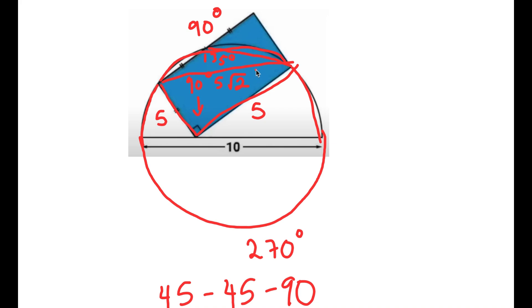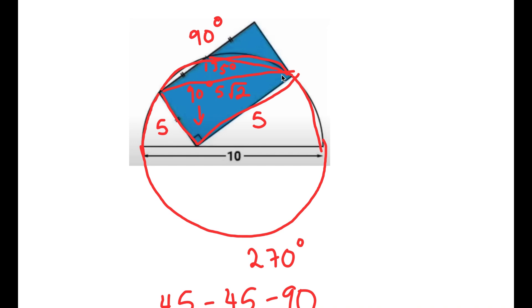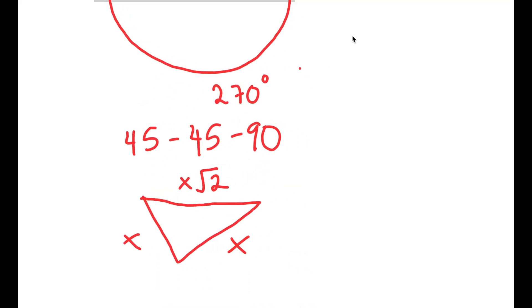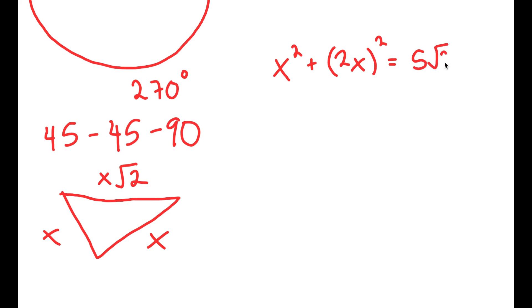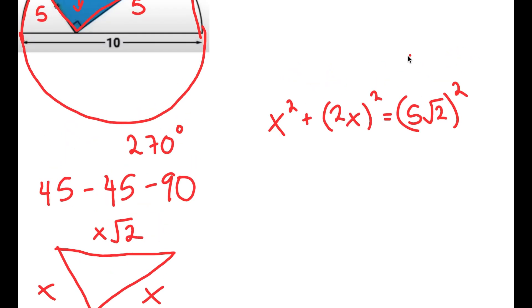To find the area of this rectangle — this is half of the whole thing — meaning this side is going to be 2x and this side is going to be x. So I have x squared plus 2x squared is equal to 5√2 squared, using the Pythagorean theorem.